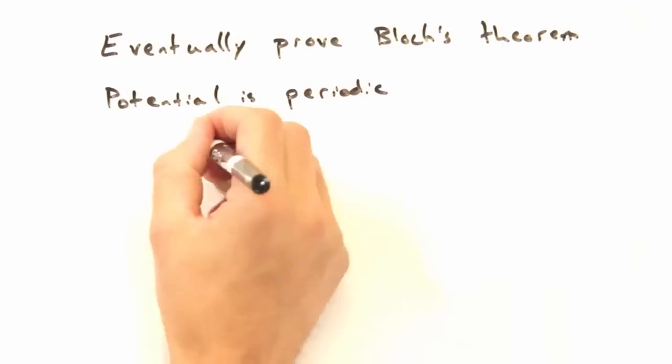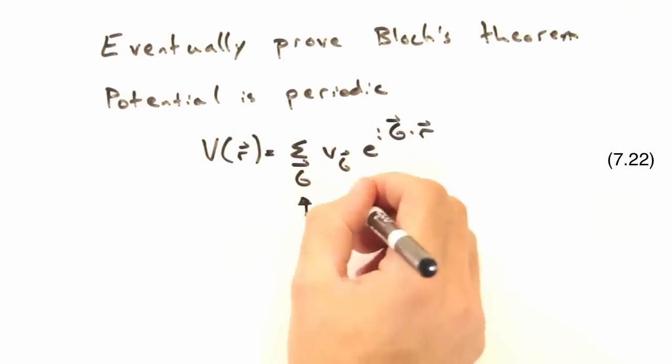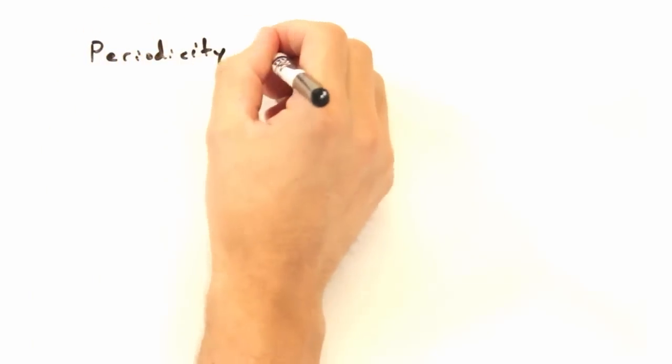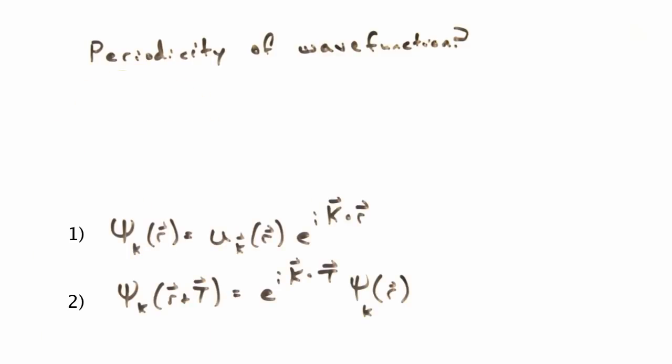Since our potential is periodic, we can express it as a Fourier series, like we've done with our scattering density and diffraction. And we'll be summing over the reciprocal lattice since the periodicity of our potential is on the atomic scale. How about the wave function? We really haven't said what kind of periodicity it should have. But didn't we do that in postulate two? Well, be careful.